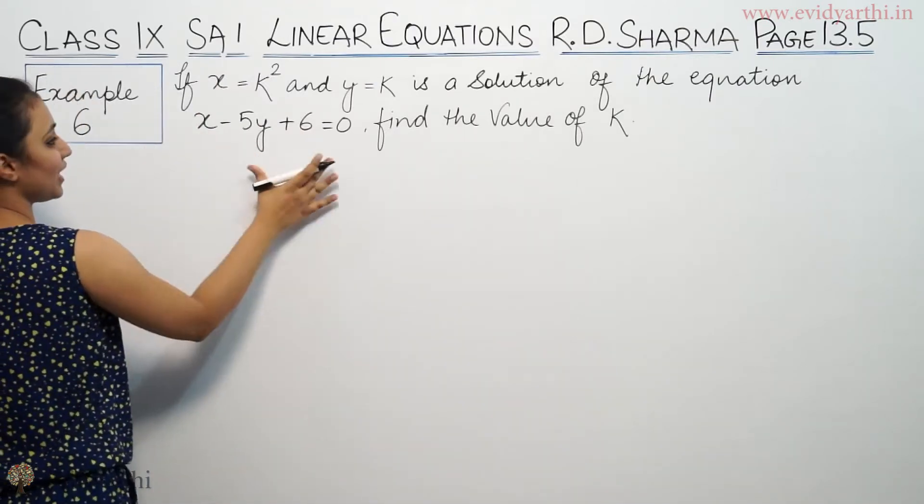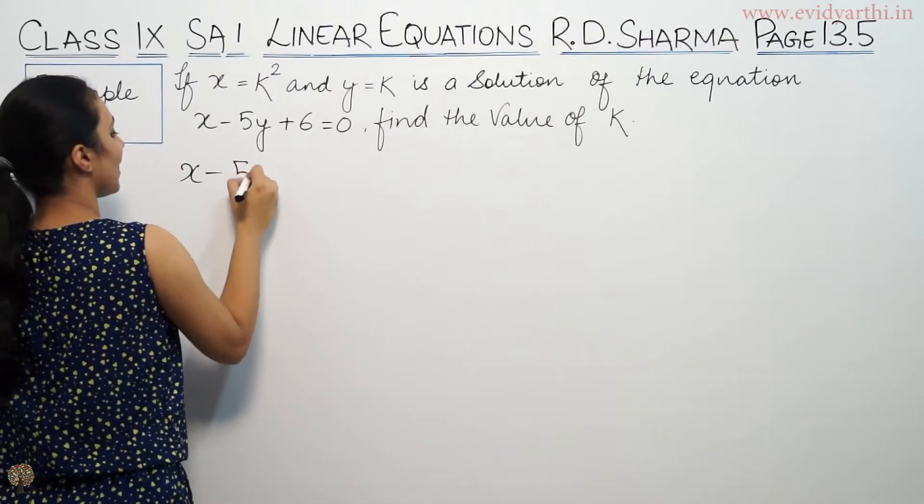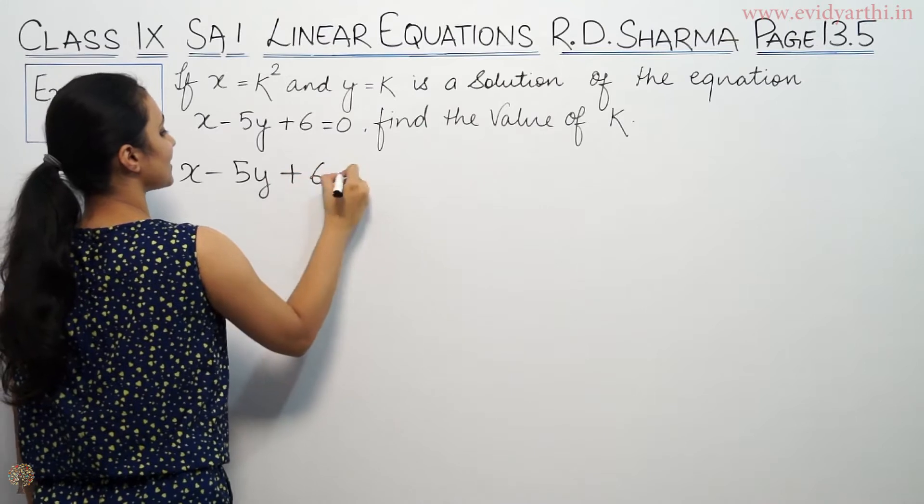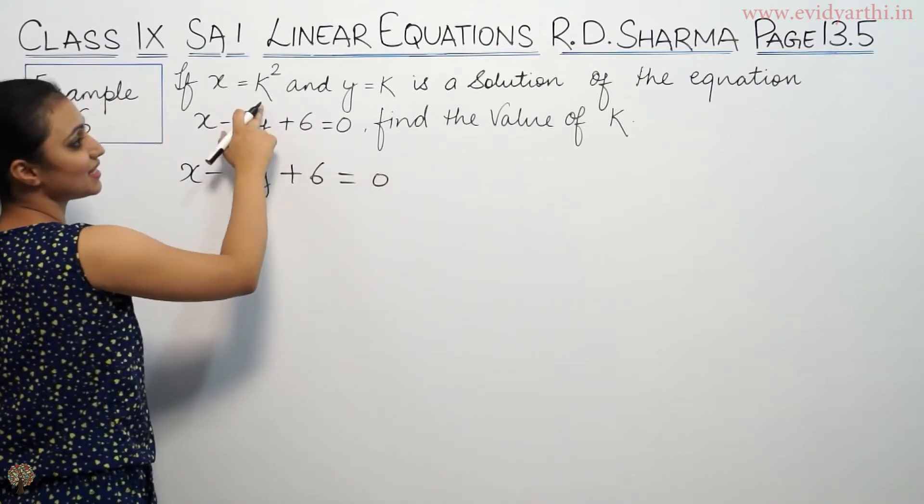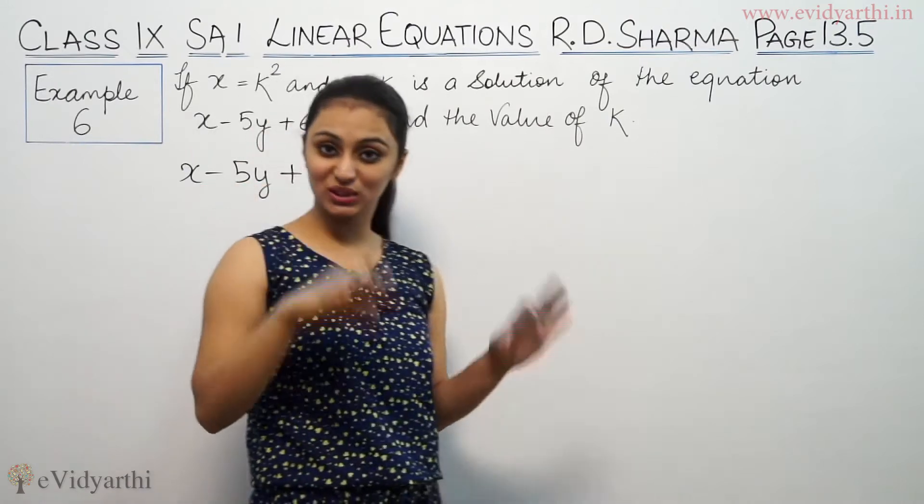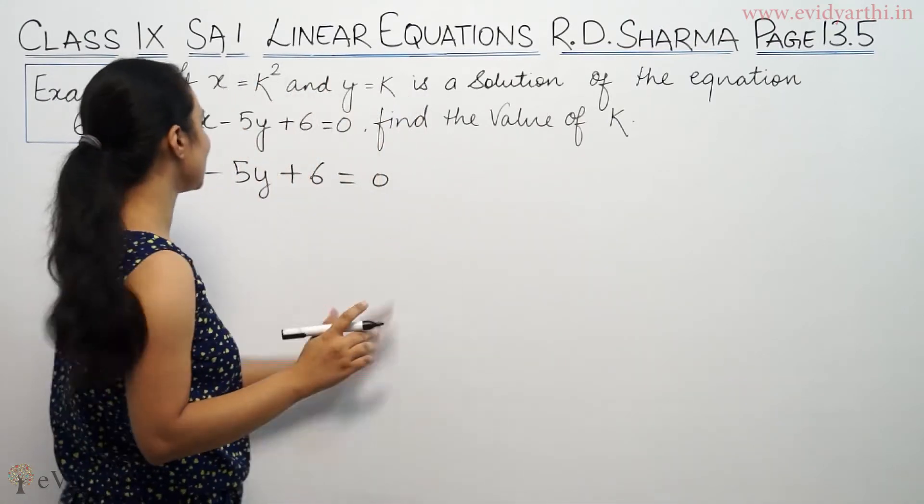So, you have this equation: x minus 5y plus 6 equals 0. This is the solution. If we put it in the equation, value should be equal to 0.